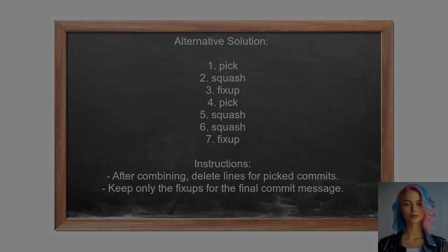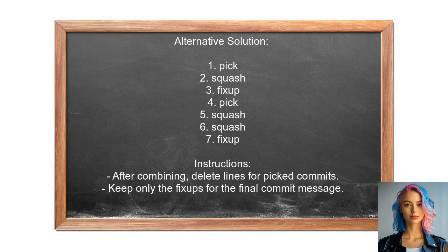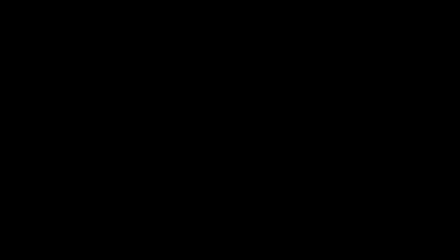Another approach involves a different sequence for the interactive rebase: use pick for the first commit, followed by squash for the second, then fixup for the third, and so on. This way, you can combine the commits effectively.